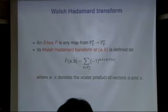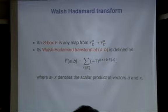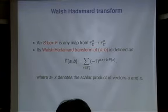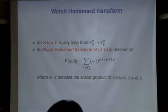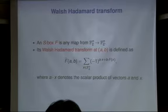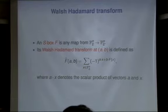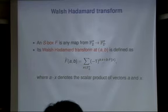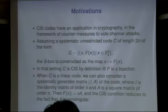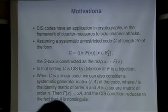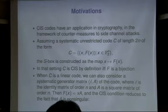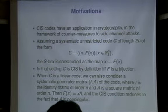To give the cryptographic motivation of CIS codes, I briefly mention the S-box — any map from F_2^n to F_2^n. The Boolean function is a map to just F_2. The Walsh-Hadamard transform at (a,b) is defined by this formula. This CIS codes have an application in cryptography in the framework of countermeasures to side channel attacks.